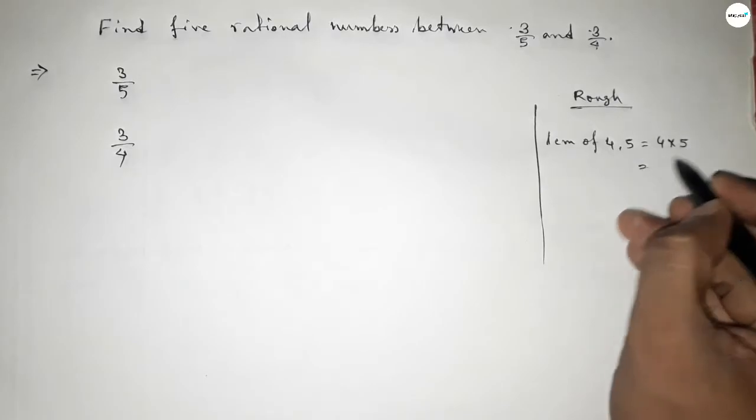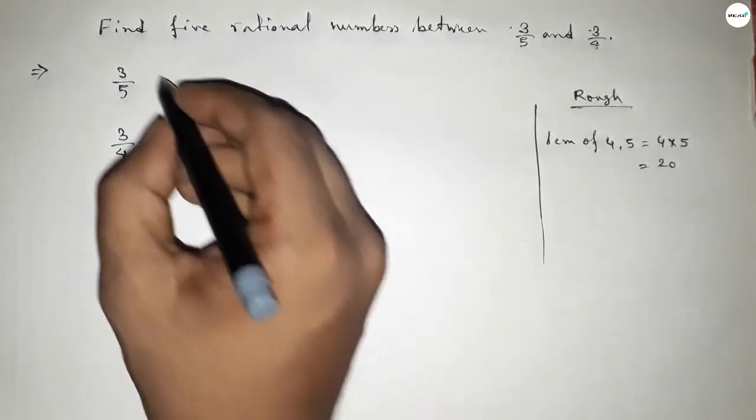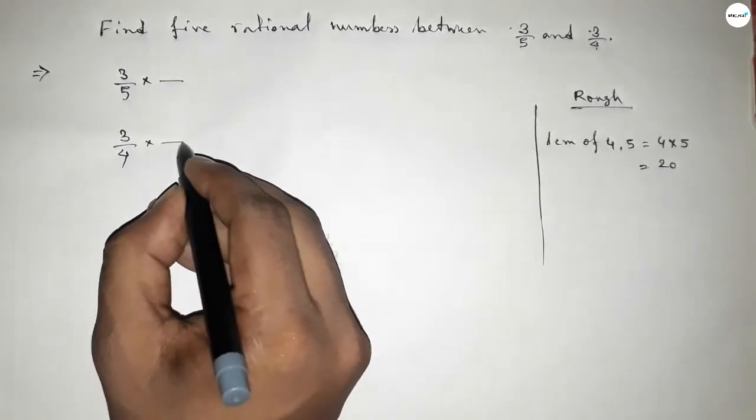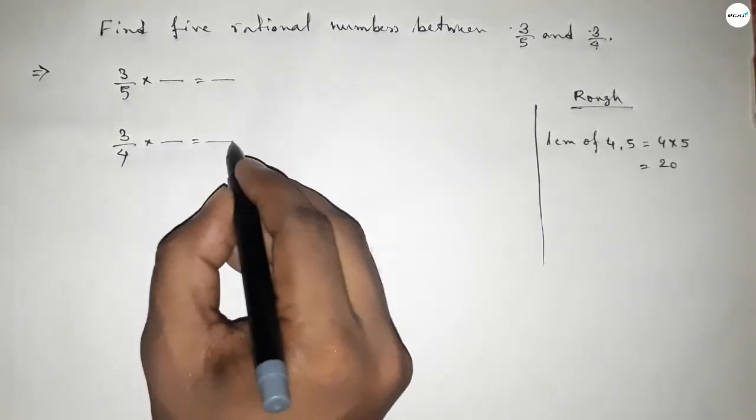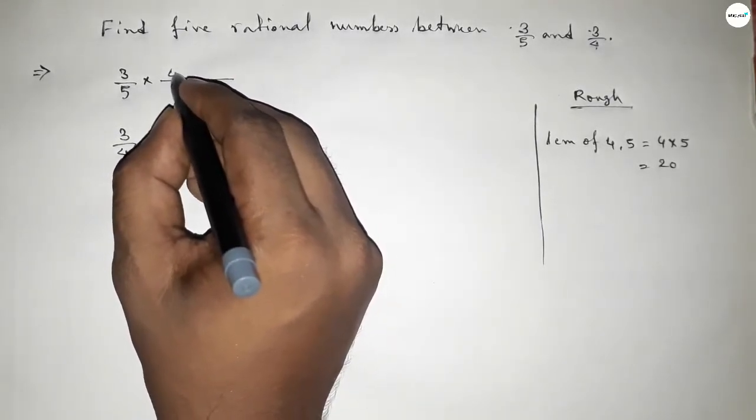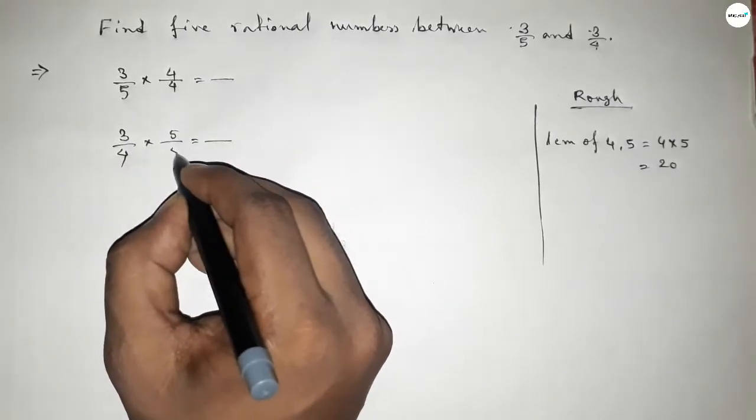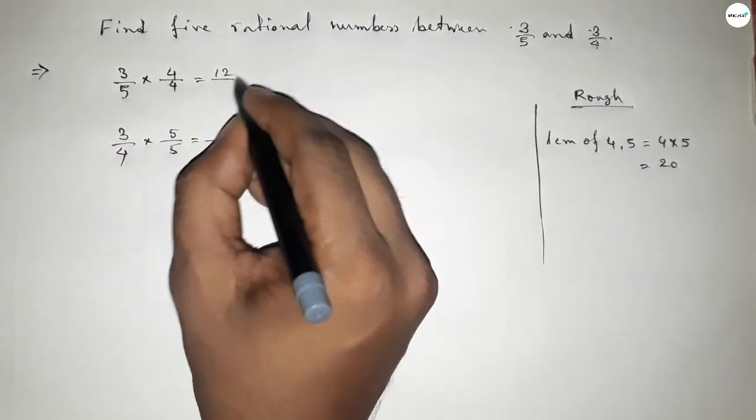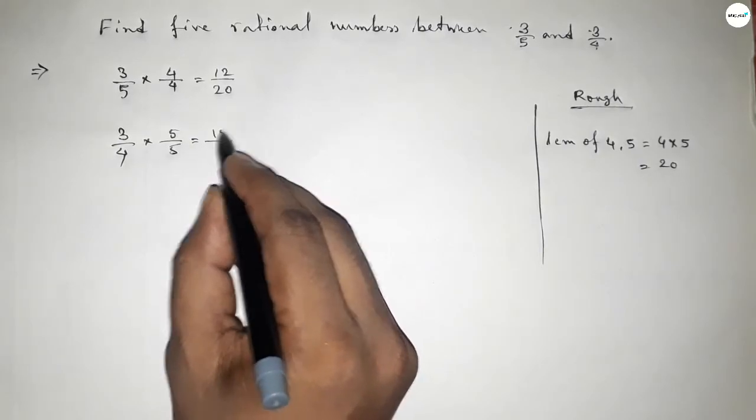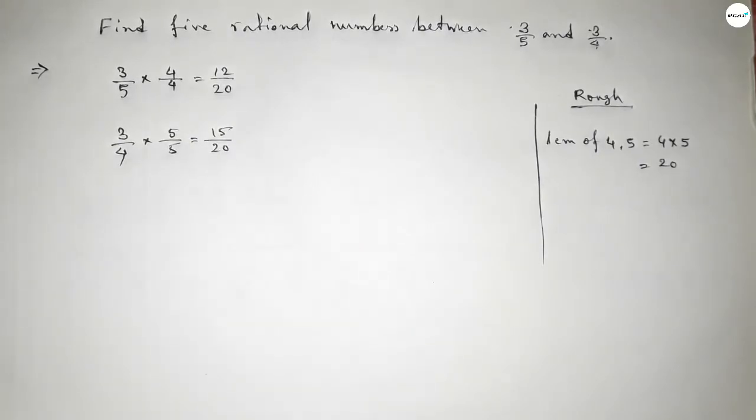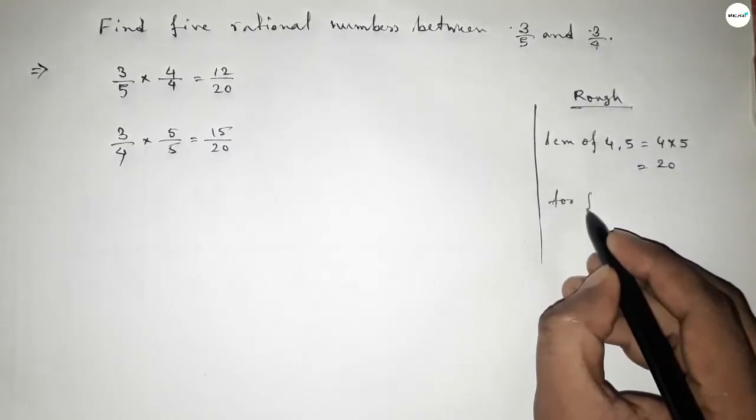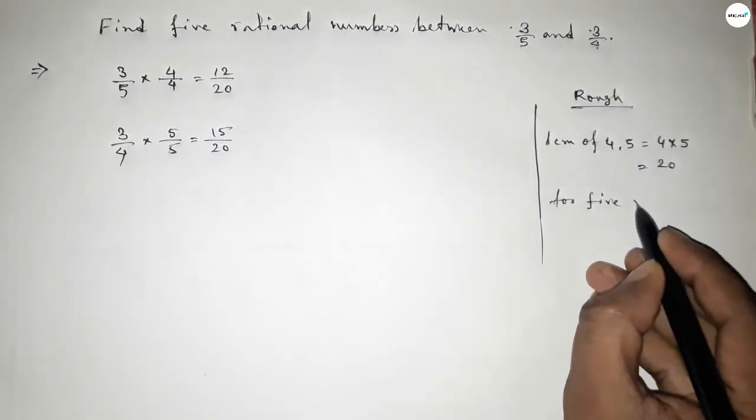Now what should be multiplying here and here to get the denominator of both 20? So if you put here up and down 4 and here 5, then we can get the denominator 20. So this is 12 over 20 and this is 15 over 20.